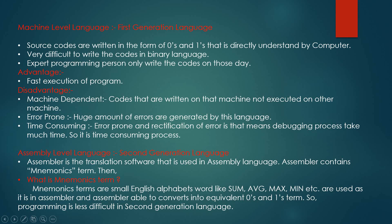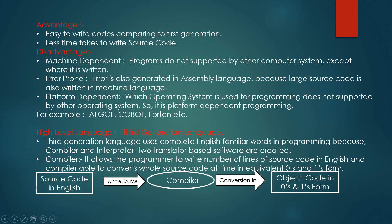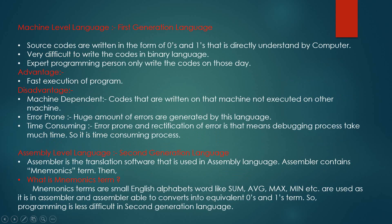But there are lots of disadvantages. The code is machine dependent — code written in one machine-level language is not executed on another machine. Much error is found in this generation because writing code in zeros and ones combinations is not easy. It is also time consuming because lots of errors are generated and rectification of errors is a very tough task — finding the error, resolving it, and then running the program is a very time-consuming process. The only advantage of this generation is the first and fastest execution of the program.